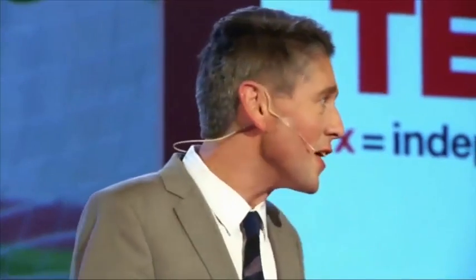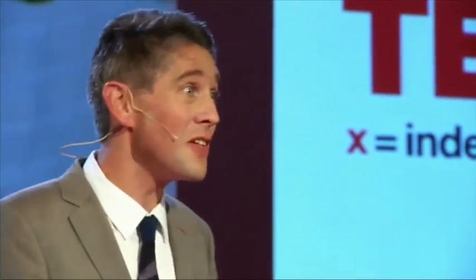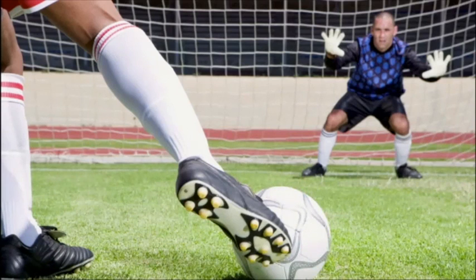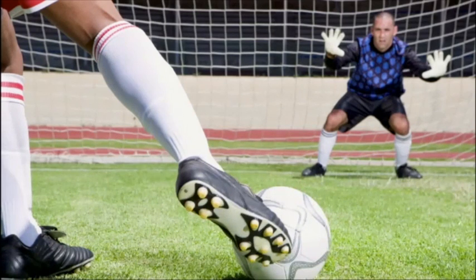Let's have a look at this goalkeeper. He's got to decide with very little time and very little evidence — maybe no evidence — and he's got to make an action to dive to the left or to dive to the right. And actually, sometimes he should inhibit making any action at all and stay in the middle, because sometimes that works as well, and that's going to be important at the end of my talk.